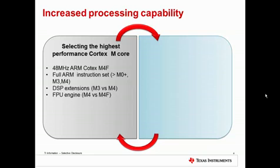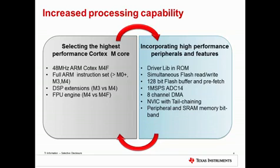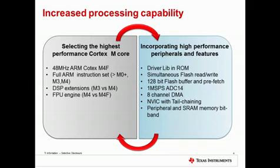It was also important that we incorporate high performance peripherals and features into the device. For example, we included the driver library in ROM. You can access ROM faster than you would if driver library was in flash. Also, the flash has two independent banks, which allow you to simultaneously read and write, which saves time. The analog is our fastest yet — one mega sample per second, 14-bit ADC — which allows you to sample data faster.